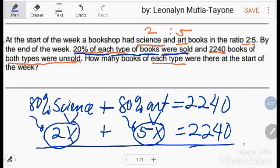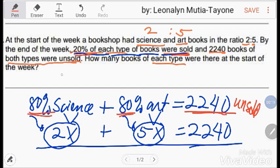Ito na yung equation natin. Bakit 80%? Yan ngayon ang tanong. Kasi yung 20% of each type books were sold. Ito ang total ng unsold. So, kung ito yung unsold, ito yung 80% ng each.